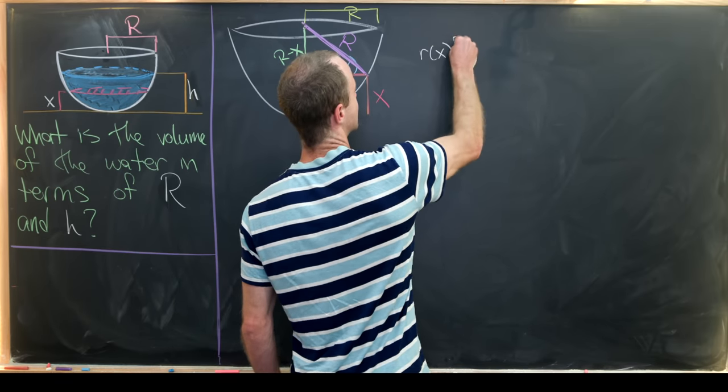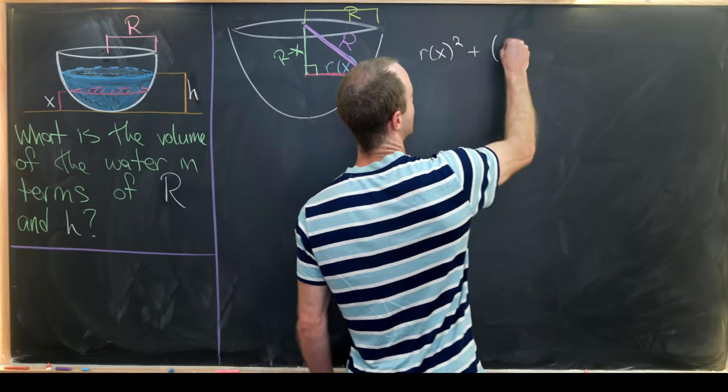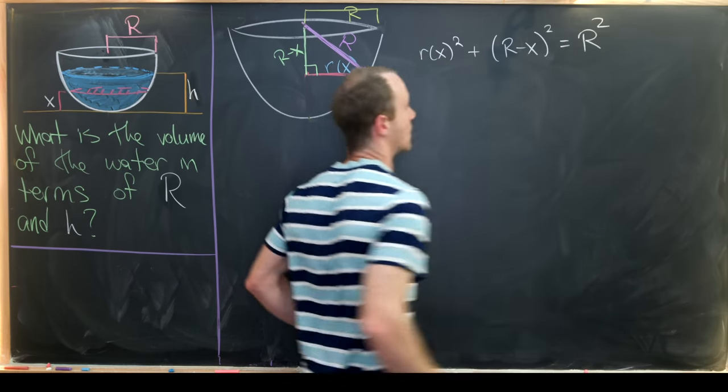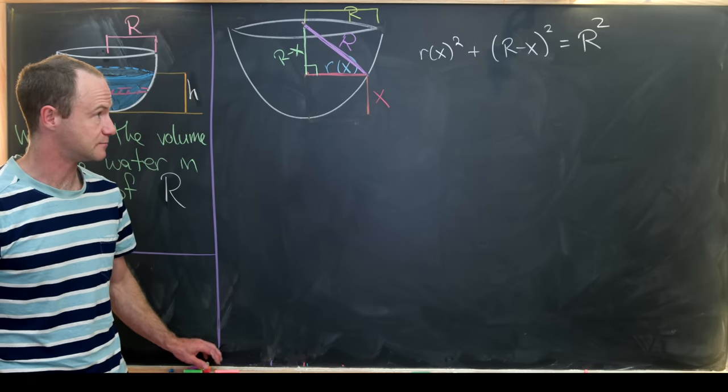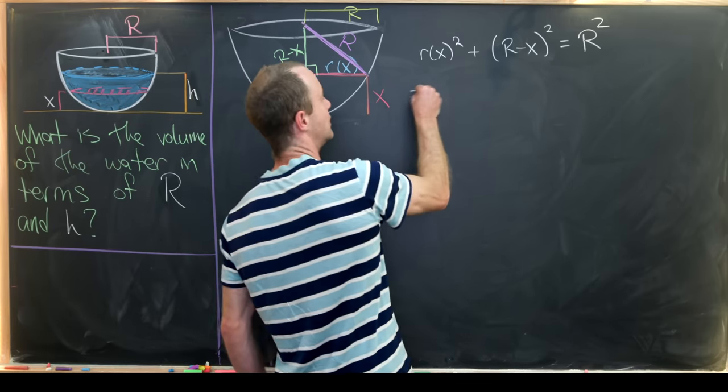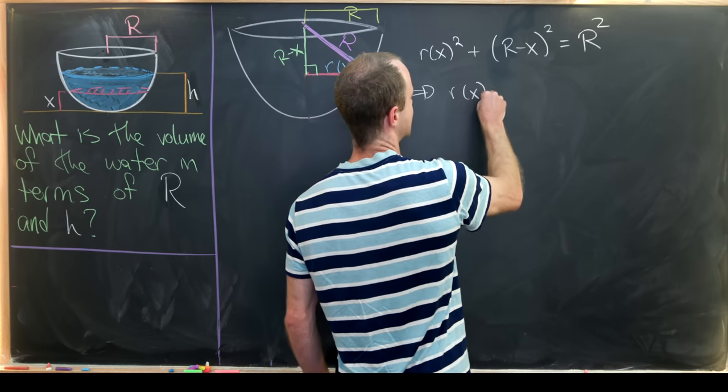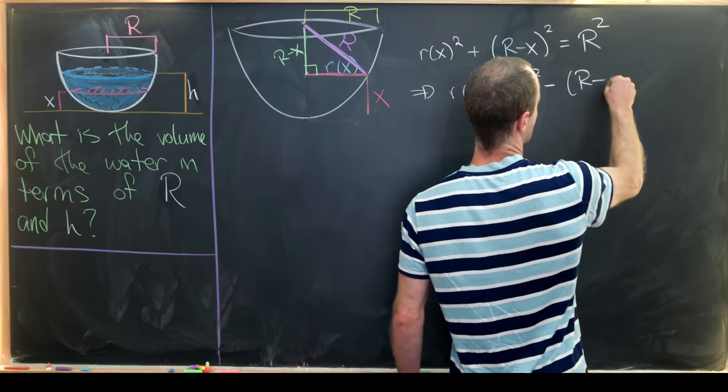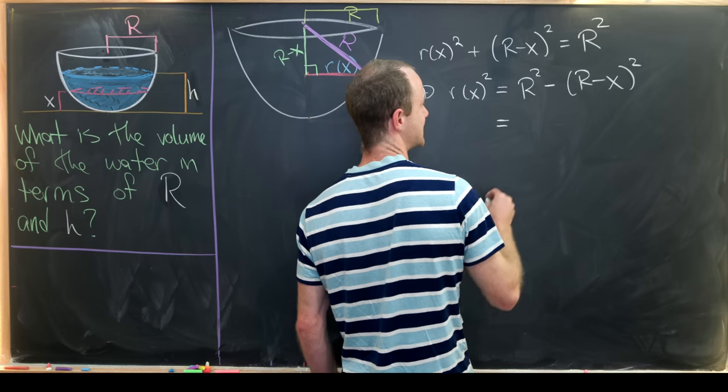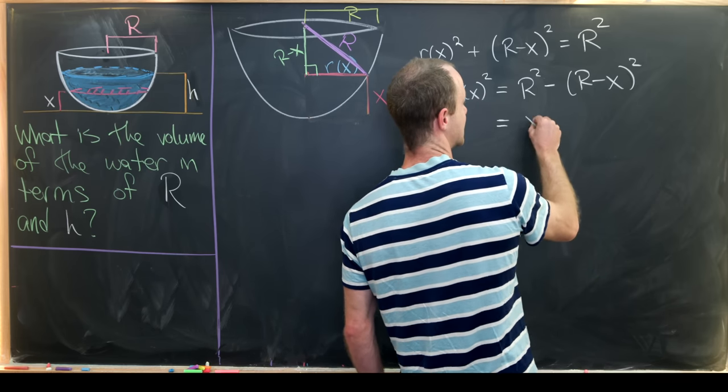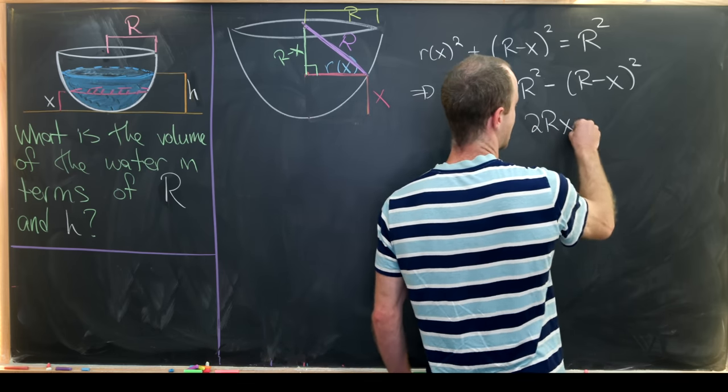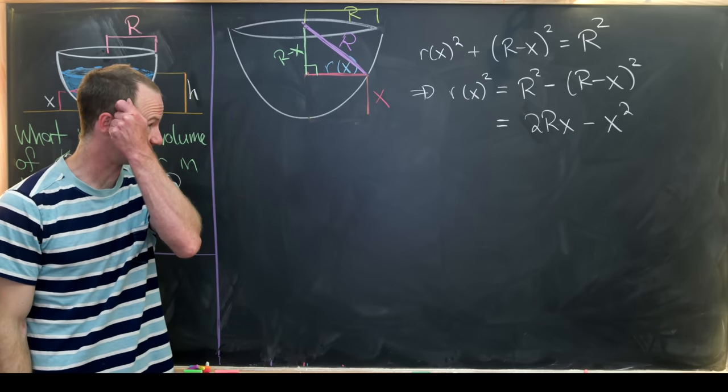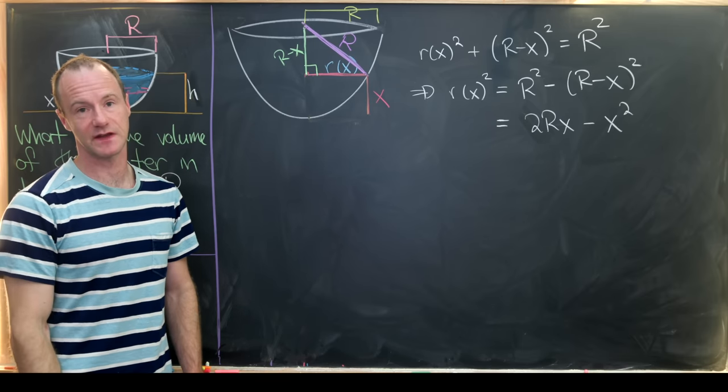So in particular, we have r of x squared plus R minus x squared equals capital R squared. That's the Pythagorean theorem. Now putting some things together, that gives us r of x squared equals R squared minus R minus x squared. That's going to give us 2Rx minus x squared after we multiply out that R minus x quantity squared and then simplify some things.